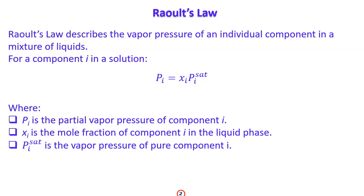Since this is a binary ideal mixture, it follows Raoult's Law. Raoult's Law describes the vapor pressure of an individual component in a liquid mixture. For component i in solution, the partial pressure P_i equals X_i times P_i_saturated. Here, P_i is the partial vapor pressure of component i, X_i is the mole fraction of component i in the liquid phase, and P_i_saturated is the vapor pressure of the pure component i.